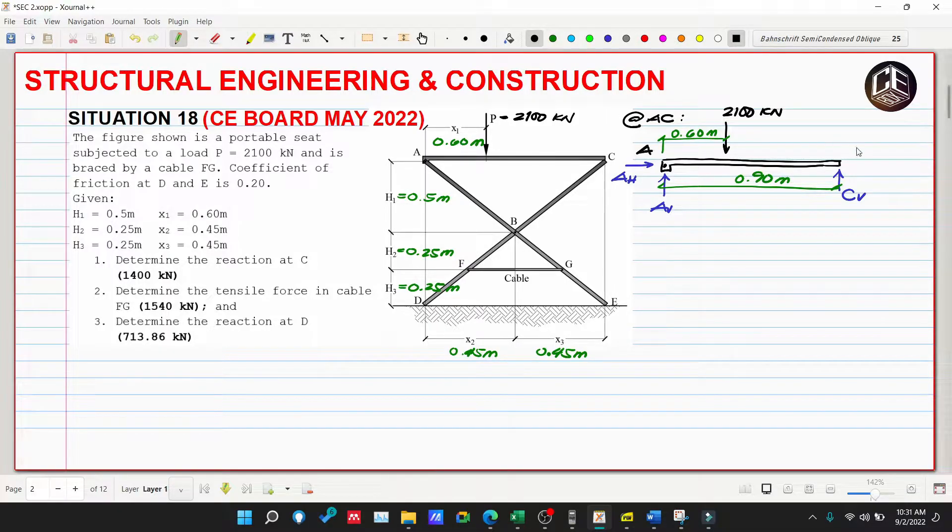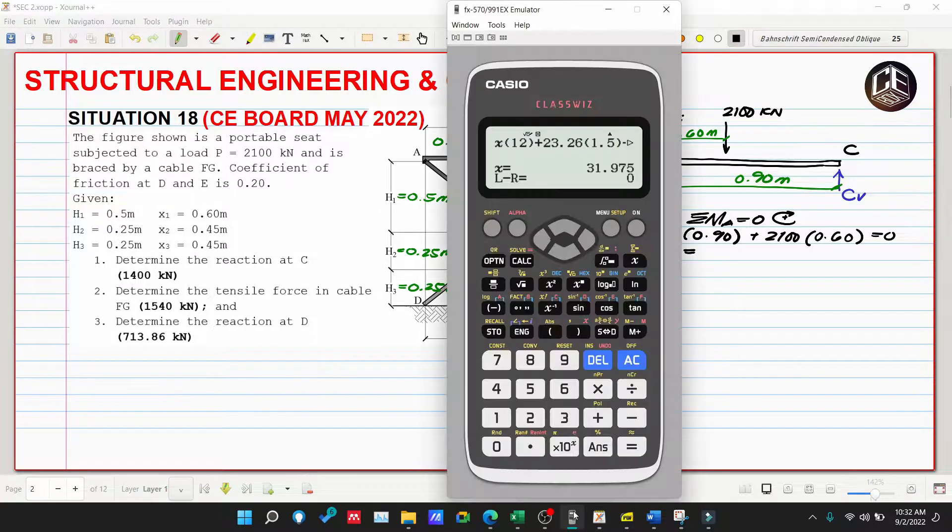Now let's solve for the reaction at C. By summation of moment at A equals zero, clockwise is positive. Negative CV multiplied by 0.90, then the 21 will rotate clockwise, so positive 21 multiplied by 0.60 equals zero.